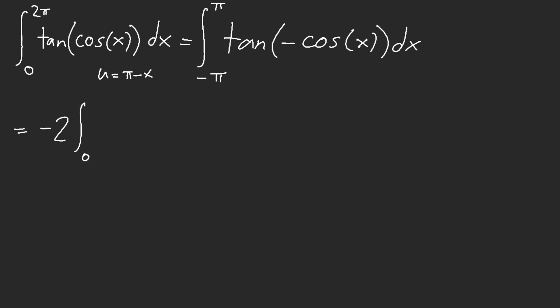So negative 2 from 0 to pi, tangent of cosine of x. Okay. But what now?